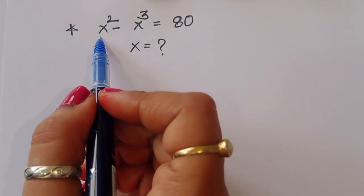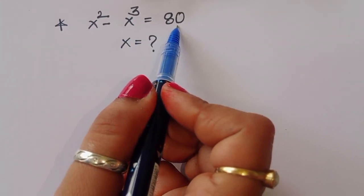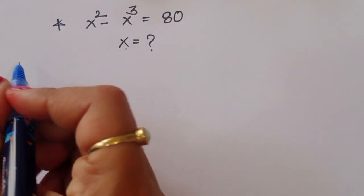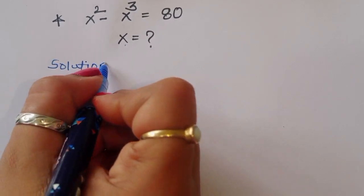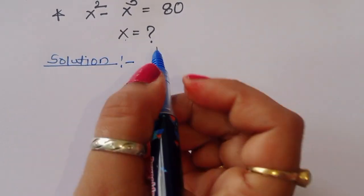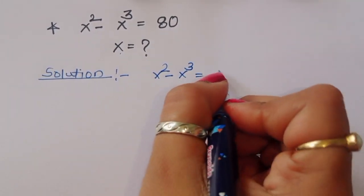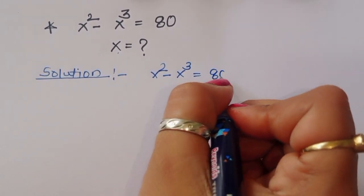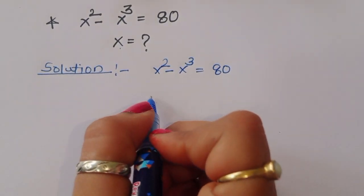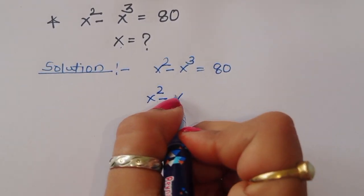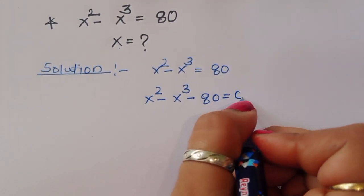The question is: given x squared minus x cubed is equal to 80, we have to find out the value of x. Let's see the solution. x squared minus x cubed is equal to 80, this is the given question. So we can write x squared minus x cubed minus 80 is equal to 0.